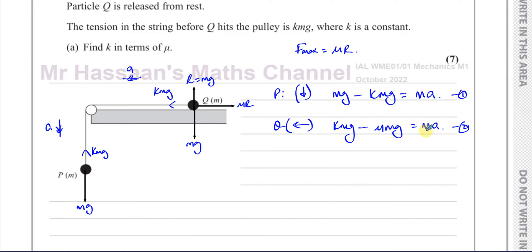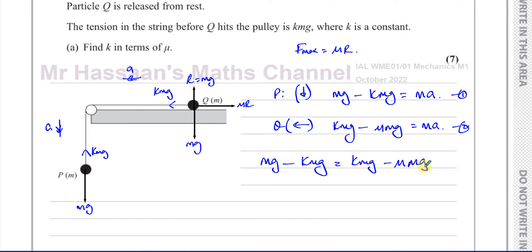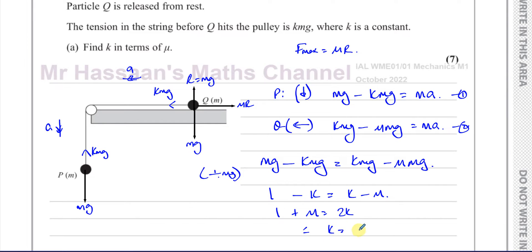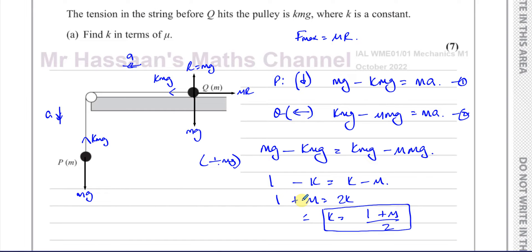Since both equations equal MA and the mass and acceleration are the same, we can equate them: MG minus KMG equals KMG minus mu·MG. Dividing everything by MG gives: 1 minus K equals K minus mu. Rearranging: 1 plus mu equals 2K, therefore K equals (1 + mu) / 2. That's the answer to part A.